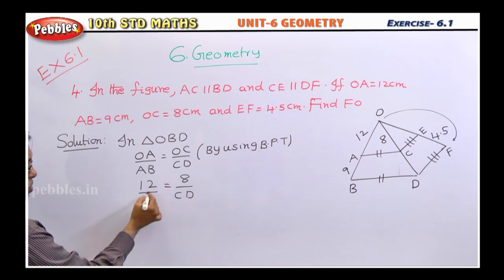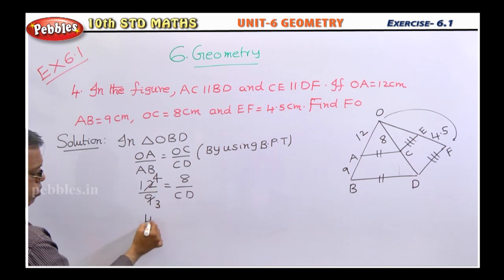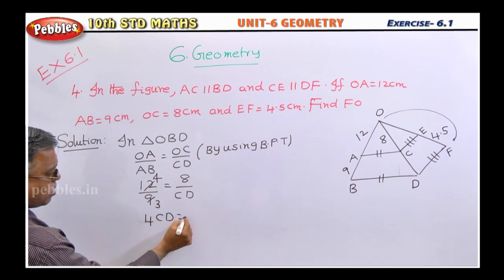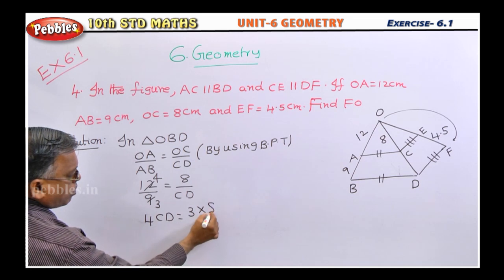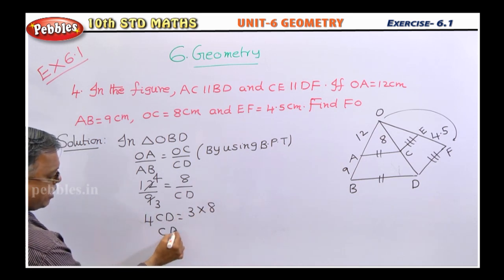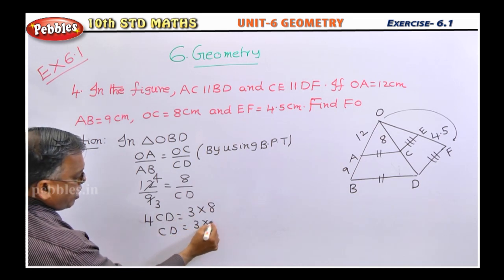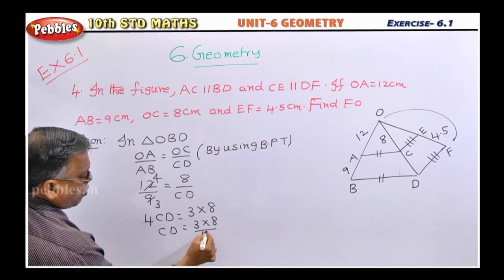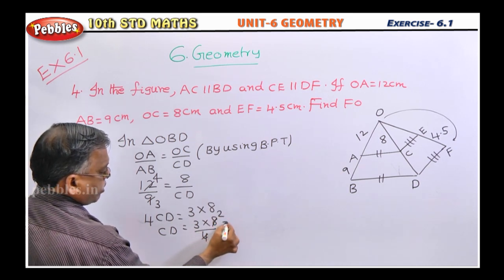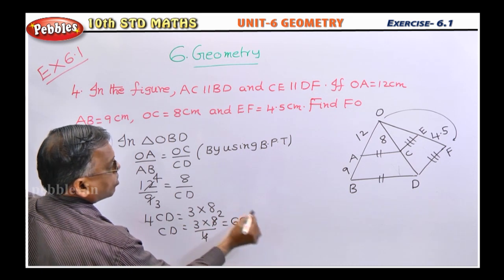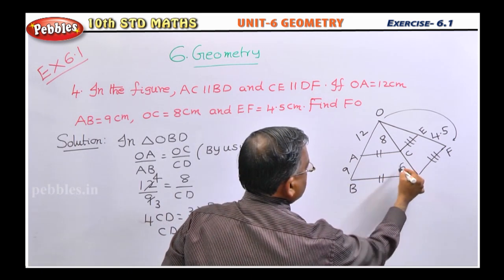Now, here, with three table I can cancel. Three fours, three threes. Cross multiply. 4CD is equal to 3 into 8. Now, what is CD? 3 into 8 by 4. Nothing but 4 ones, 4 twos. So, it is 6 centimeter. So, this value we got it as 6 now.